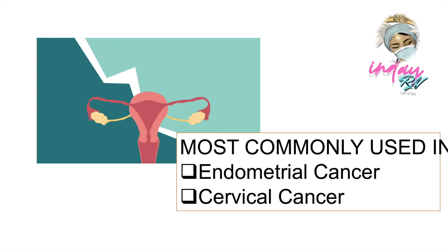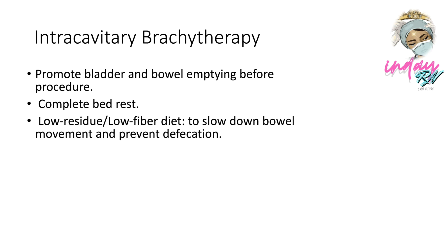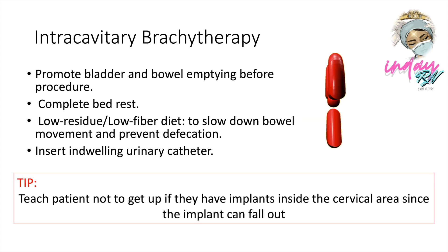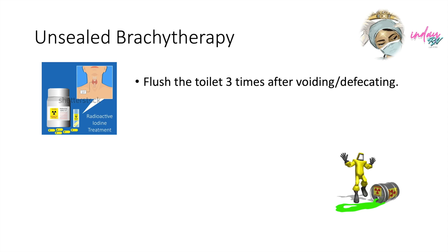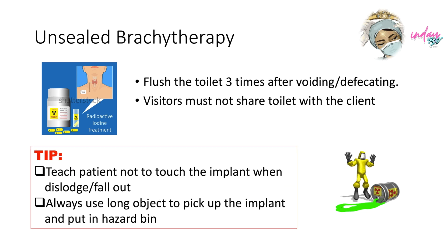Intracavitary brachytherapy is most commonly used in endometrial and cervical cancer. The nurse needs to promote bladder and bowel emptying before the procedure. Complete bed rest is necessary, along with a low-residual or low-fiber diet to slow bowel movement and prevent defecation. An indwelling urinary catheter may be inserted as ordered. Teach the patient not to get up if implants are inside the cervical area, as the implant can fall out easily. In unsealed brachytherapy, teach the patient to flush the toilet three times after voiding and defecating.